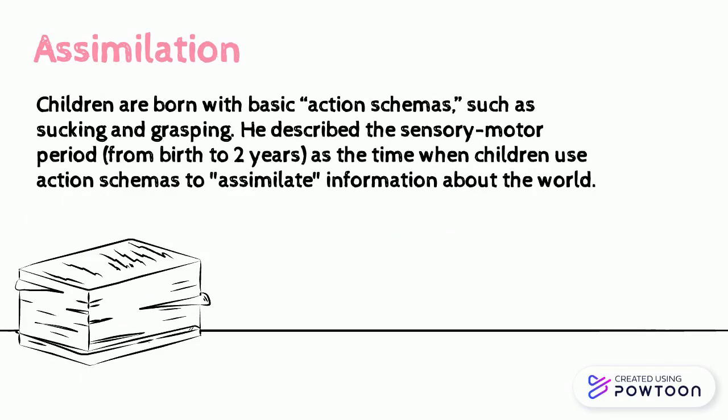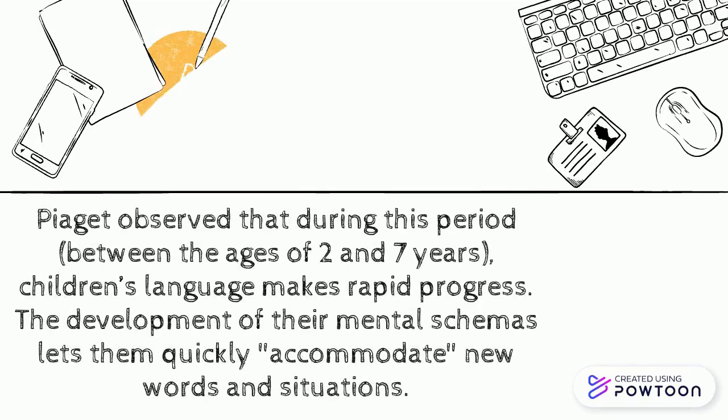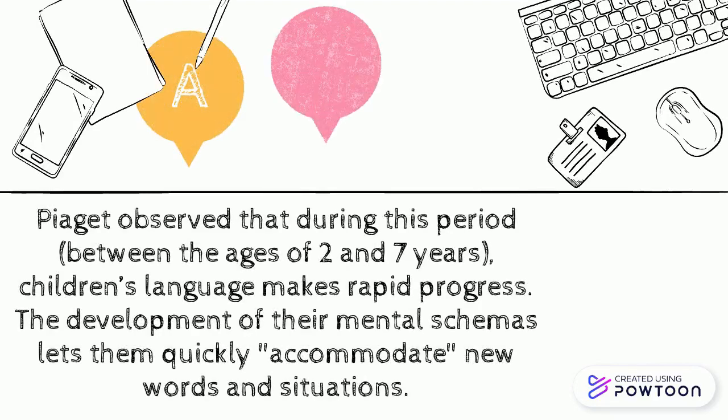Second, assimilation. According to Piaget's theory, children are born with basic action schemas, such as sucking and grasping. He describes the sensory motor period from birth to two years old as the time when children use action schemas to assimilate information about the world. Piaget describes two functions of children's language: the egocentric and the socialized. During the sensory motor period, children's language is egocentric — they talk either for themselves or for the pleasure of associating anyone who happens to be there with the activity of the moment.